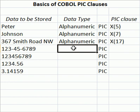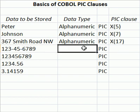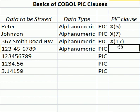The next one you might say is numeric, and for the most part you'd be correct, except we have two hyphens within the data to be stored. If we define this as numeric with PIC 9 and a byte count, we will get an error because we cannot store anything other than numbers in a PIC 9. So because those two hyphens are in there, it is by default alphanumeric of size 11 — nine numbers plus two hyphens.